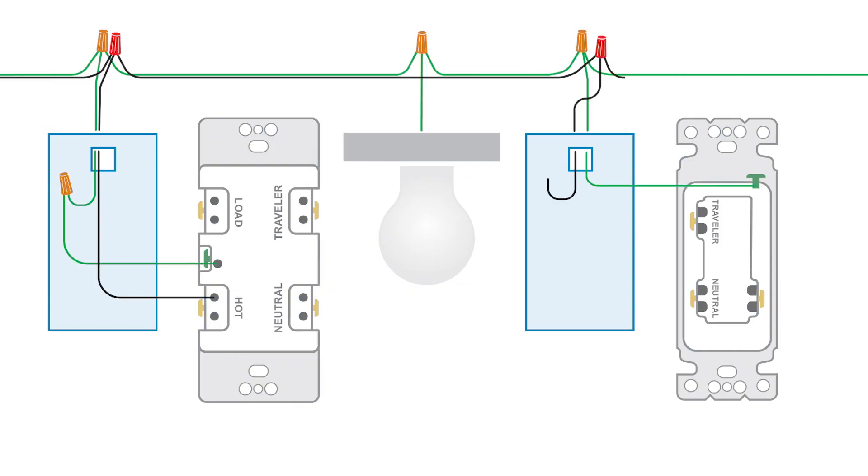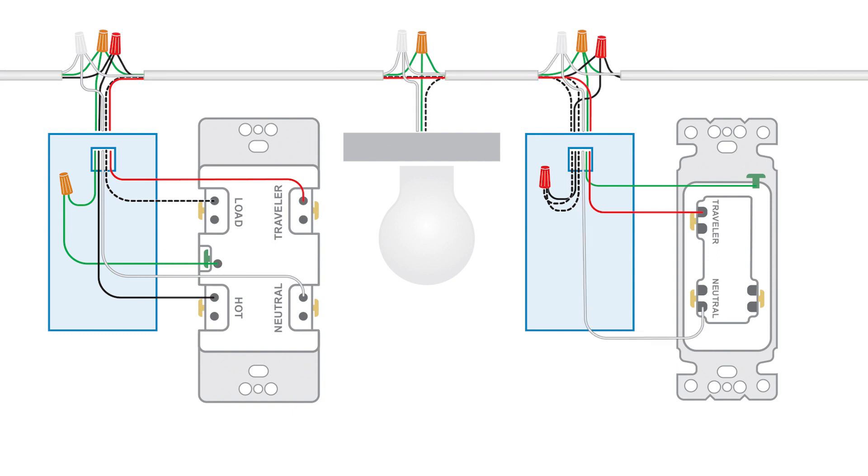The following diagram is an example of a common installation. The lighting fixture is between the switches, as shown here.